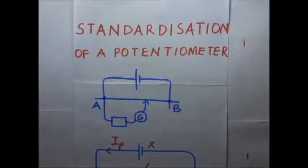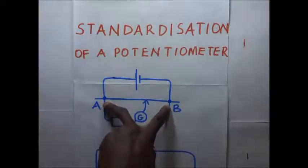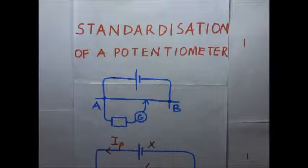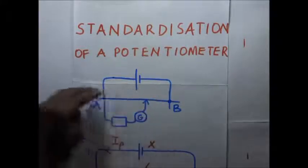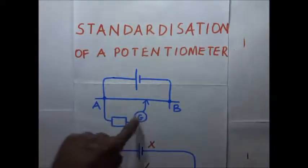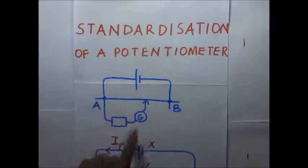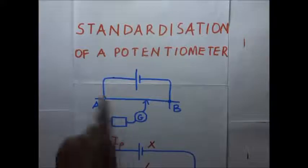A potentiometer consists of a mounted resistance wire AB, which has a uniform cross-sectional area and can be of any length — 100 centimeters, 120 centimeters, and so forth. The potentiometer has a primary circuit and a secondary circuit. The secondary circuit has a galvanometer, and the balance condition is when the galvanometer deflects zero — meaning no current flows through it — and that is the point at which the balance point along AB is obtained.